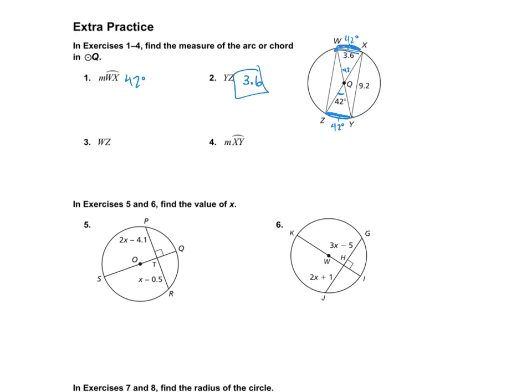For the next one, we need to find W to Z. So W to Z is this length right there. Be careful, that's not the arc they're asking for. They're asking for the length. And that'll also be 9.2. Because this is 9.2, that will be 9.2.